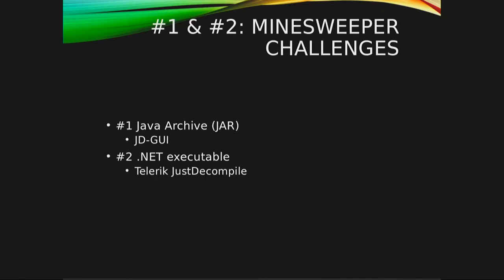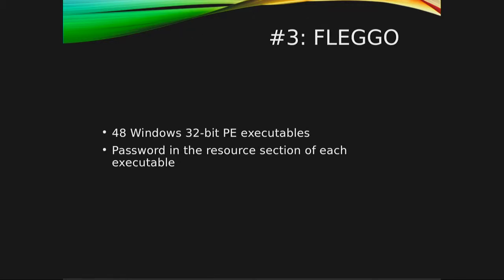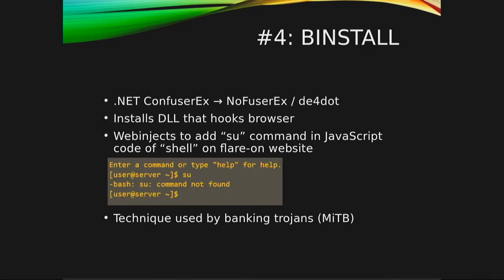The first and second challenges were basically testing if you can use a decompiler, like a Java Decompiler or a .NET Decompiler — these are pretty easy. The third one was about whether you can extract some data out of the resource section of a Portable Executable, so that's also rather trivial.